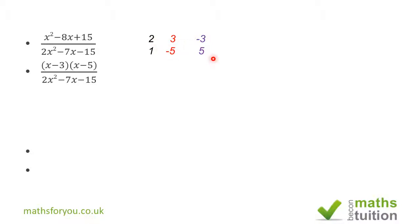To determine which is correct, we cross-multiply: 1×3 = 3 and 2×(-5) = -10, so -10 + 3 = -7, which is exactly what we need. So the denominator factors as (2x+3)(x-5). Checking the alternative: 2×5 = 10 and 1×(-3) = -3, giving -10 - 3 = +7 but we need -7, so (2x-3)(x+5) does not work.